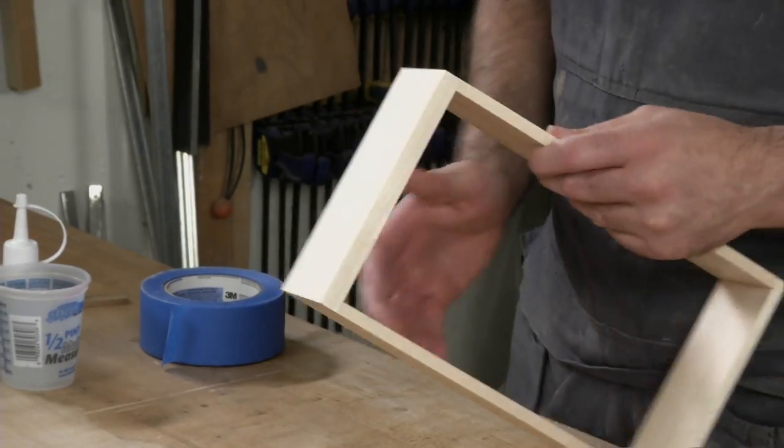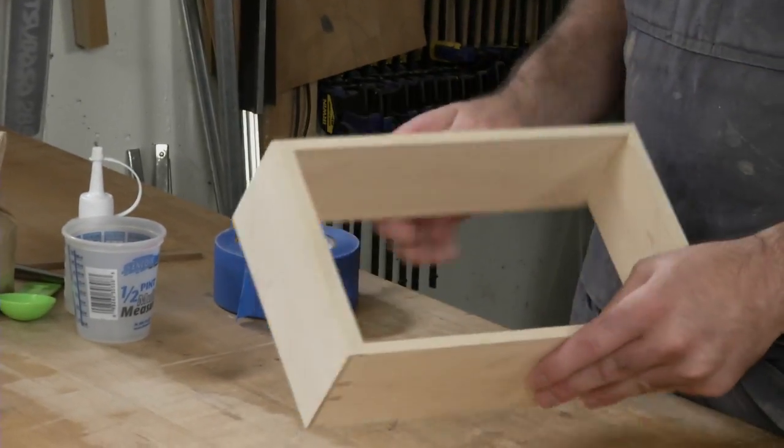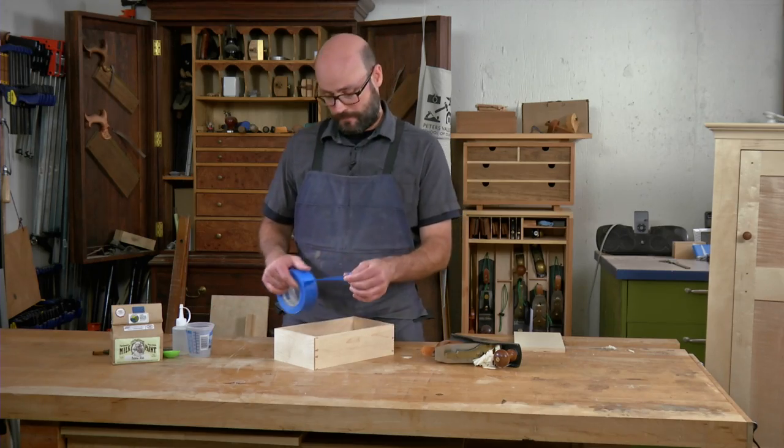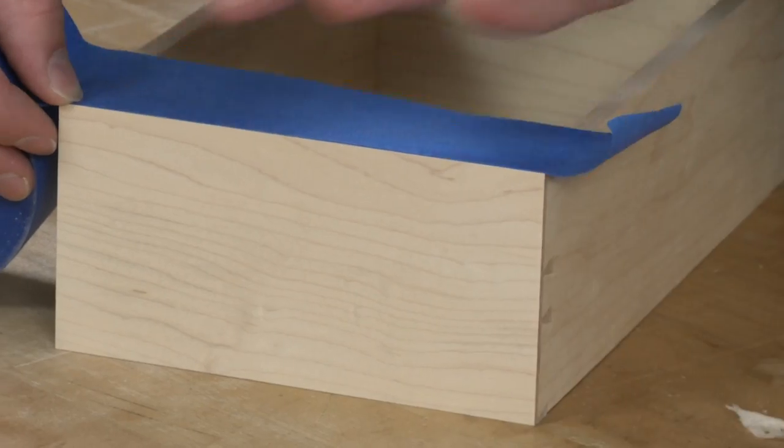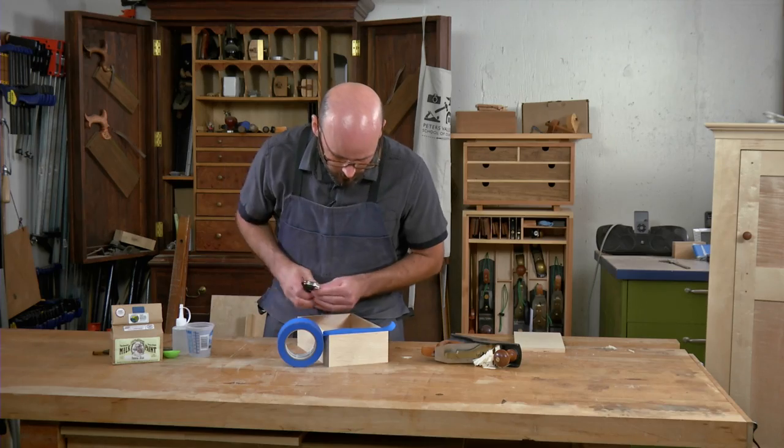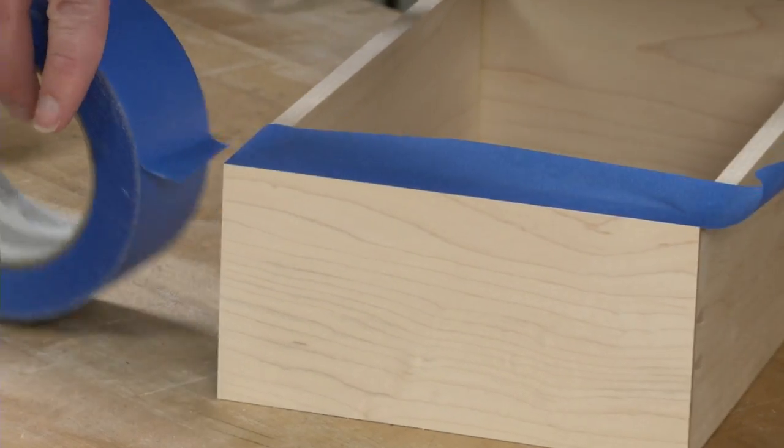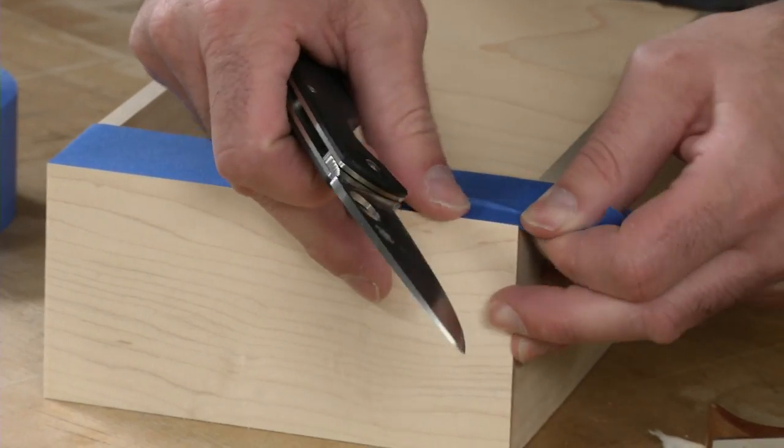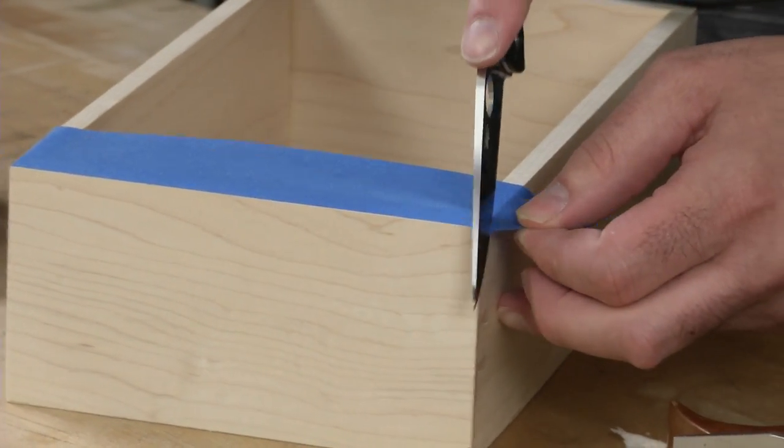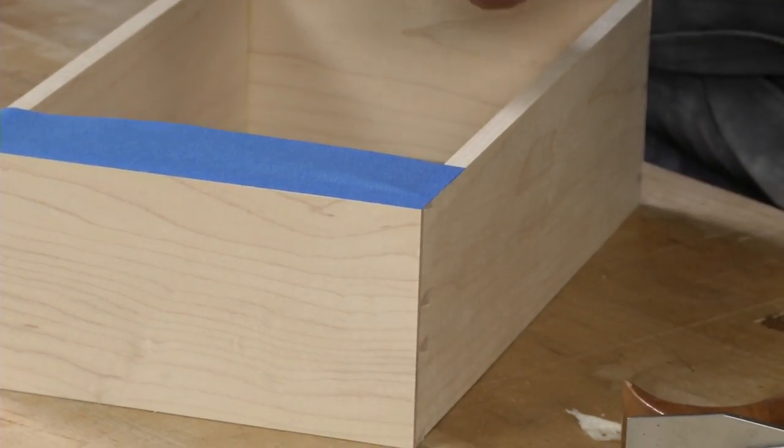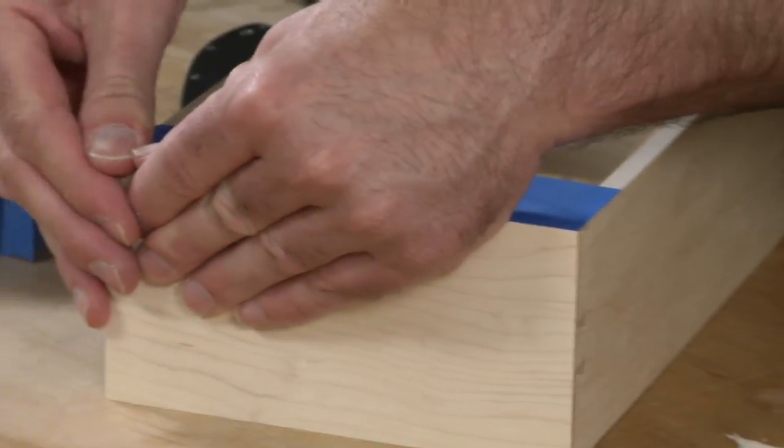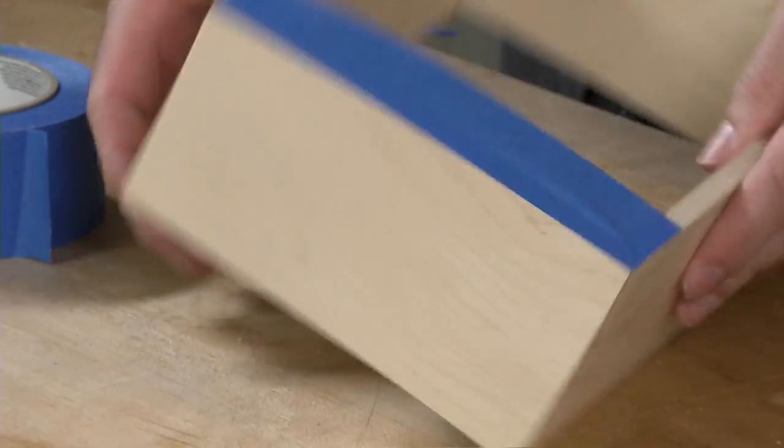I'm only painting the front of the drawers. To keep the milk paint off the sides and the edges, all you need is a little bit of blue tape. Press the edge of the tape down firmly. You don't want any paint bleeding back underneath it.